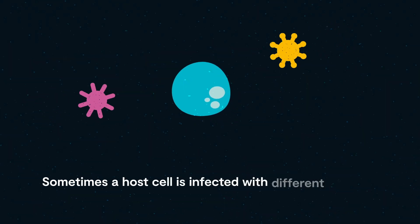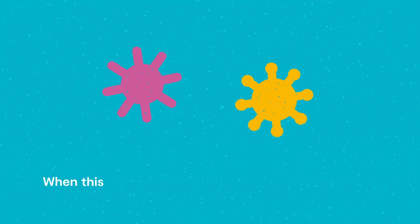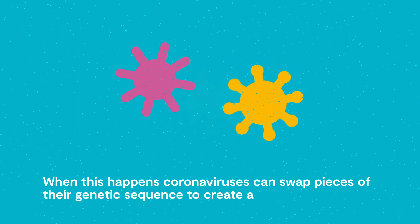Sometimes a host cell is infected with different types of coronavirus at the same time. When this happens, coronaviruses can swap pieces of their genetic sequence to create a recombinant virus.